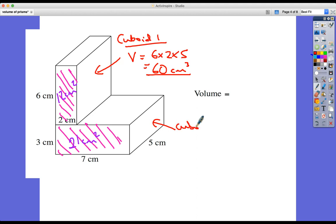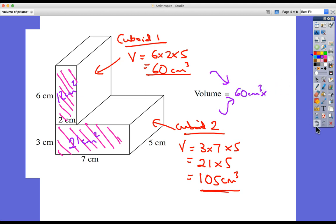For cuboid two, do exactly the same thing, just different numbers. So in this case, the volume is three times seven times by five, or three times seven we just worked out to be 21, times by five, which is 105 centimeters cubed. And then it's just a case of adding them up. So the overall volume, put these two together, is 60 plus 105, which is 165 centimeters cubed.